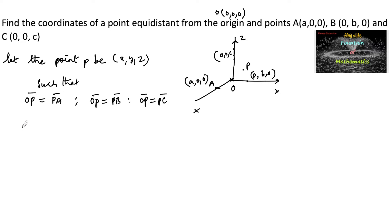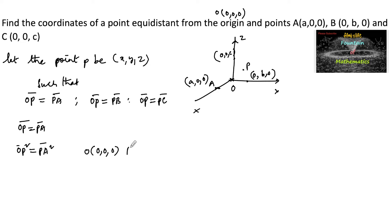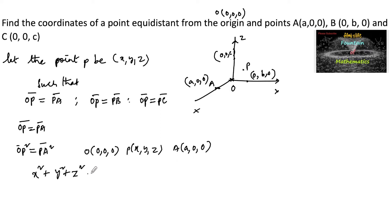Let us use OP = PA, or OP² = PA², by using the distance formula between the points. Origin O(0, 0, 0), point P(x, y, z), and point A(a, 0, 0). So we get OP² = (x−0)² + (y−0)² + (z−0)² = x² + y² + z².